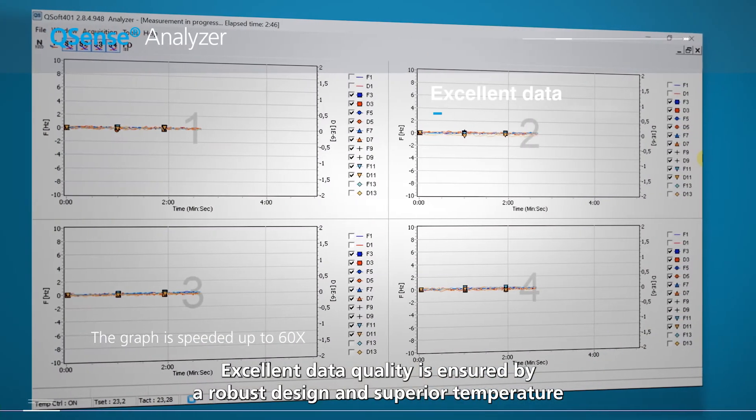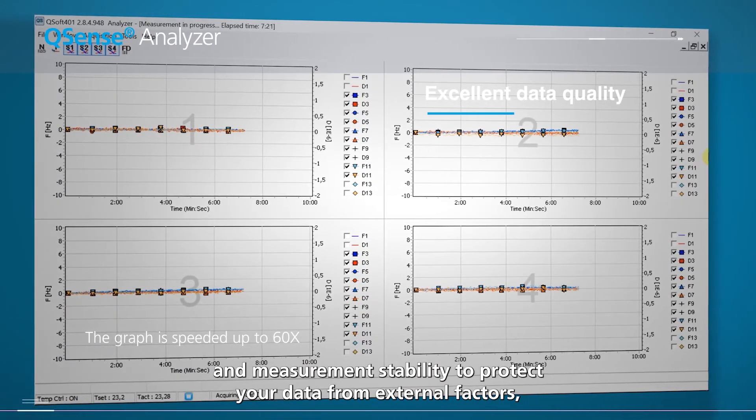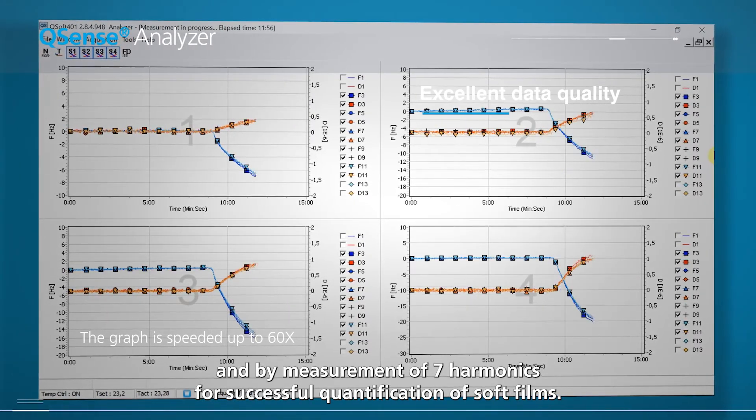Excellent data quality is ensured by robust design, superior temperature and measurement stability to protect your data from external factors, and by measurement of 7 harmonics for successful quantification of soft films.